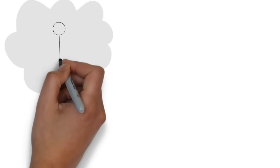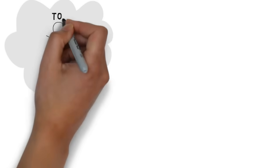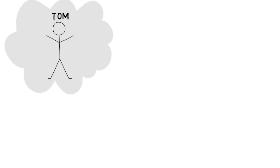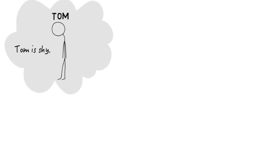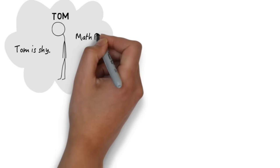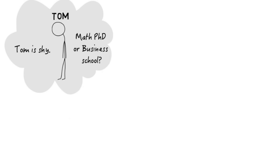I'll start with a puzzle. Imagine that you're walking across the campus of some large American university and you meet a guy, let's call him Tom. You chat with Tom for a few minutes and you notice that Tom is shy. He's not really making eye contact very often, he's mumbling, and my question for you is: would you guess that Tom is more likely to be in a math PhD program or in the business school?